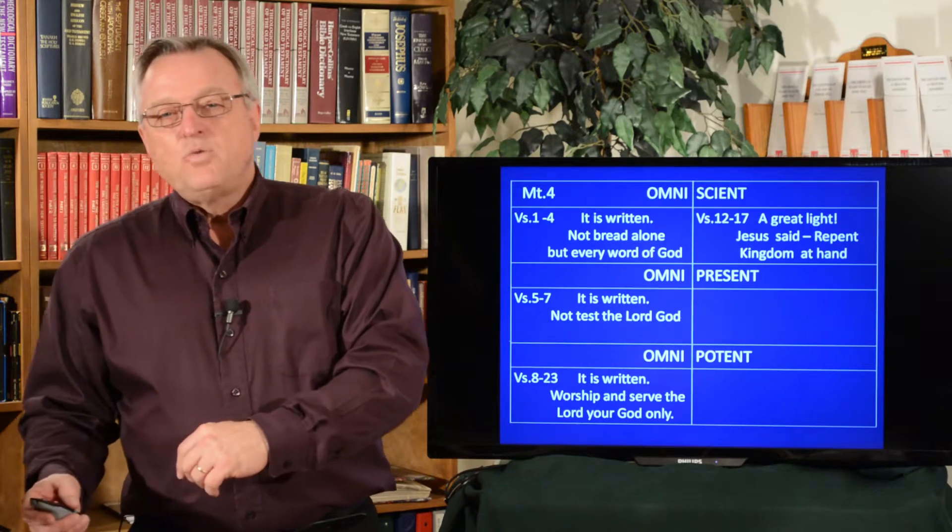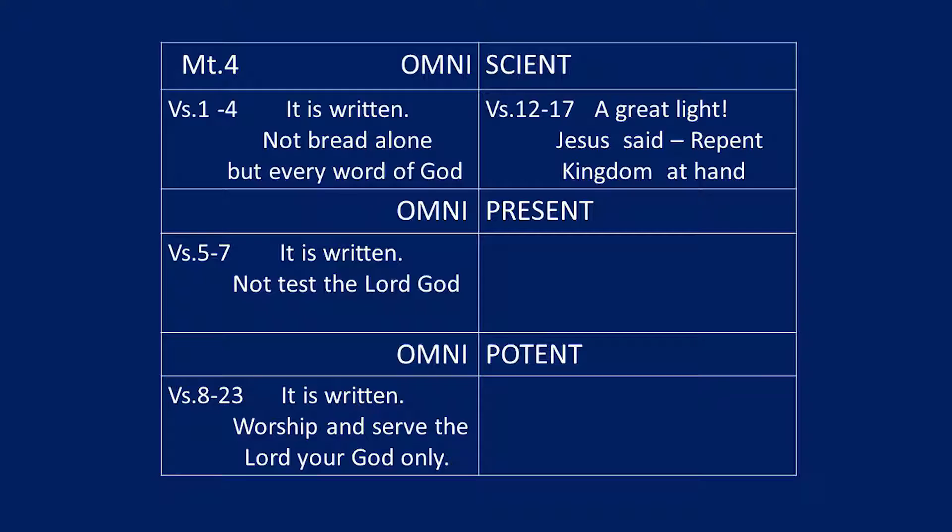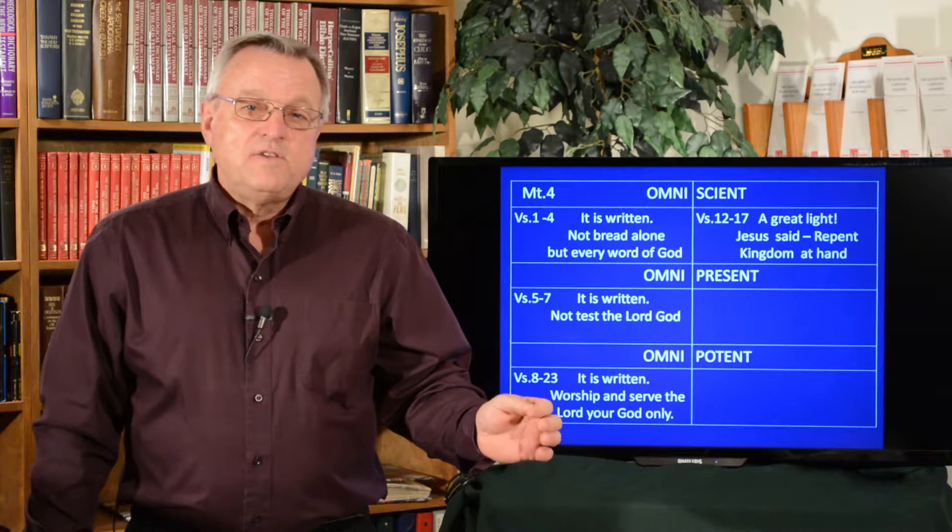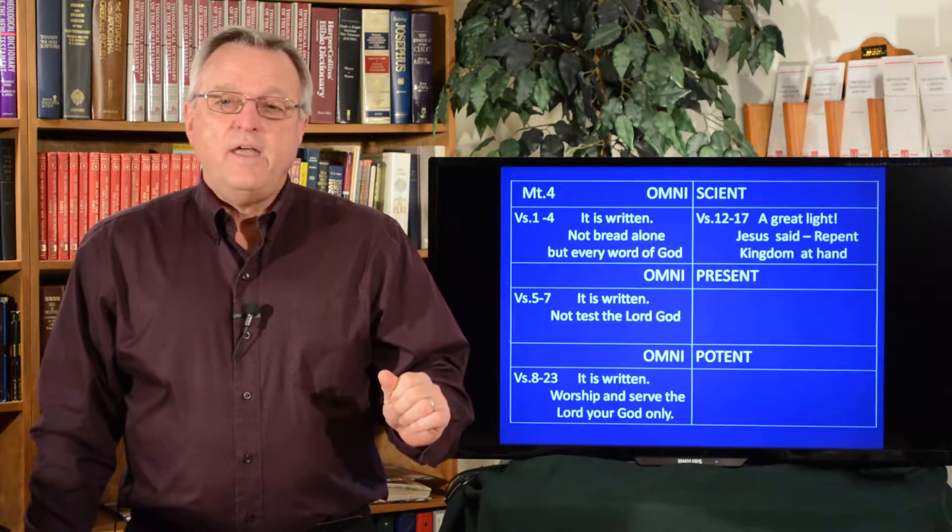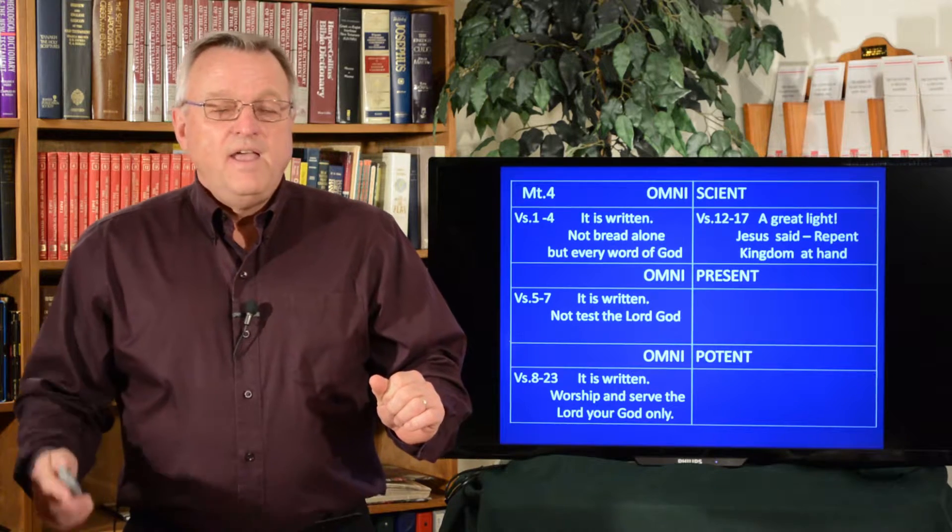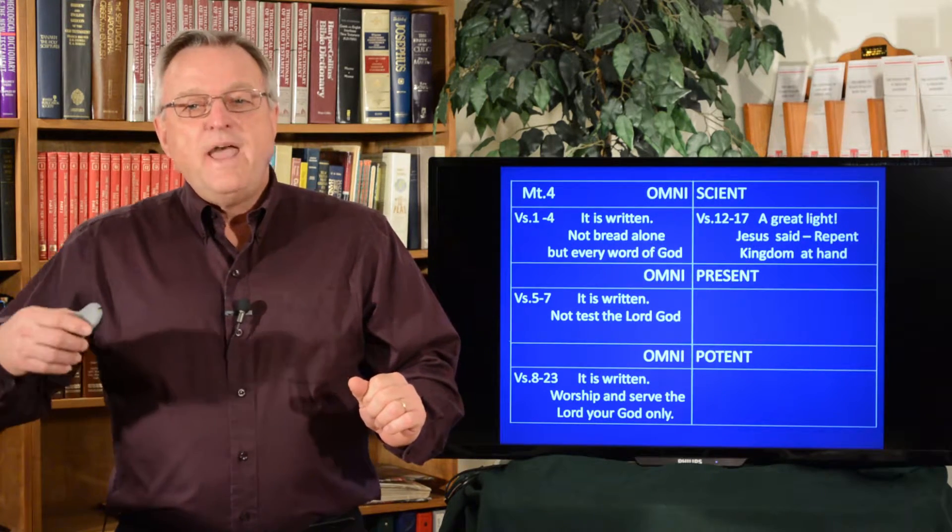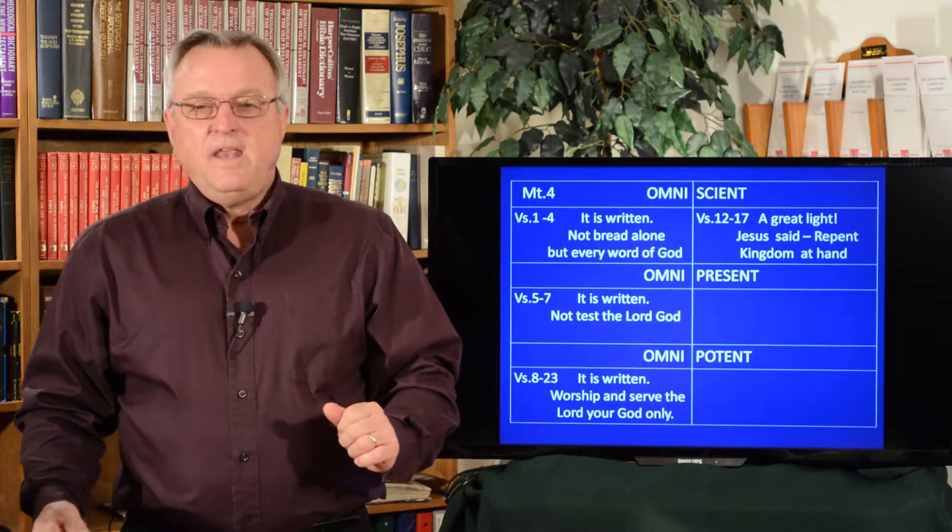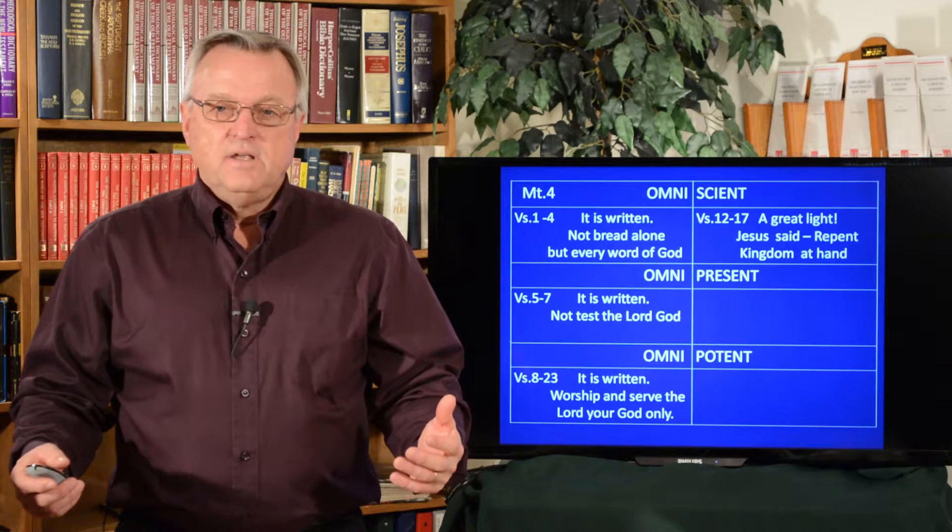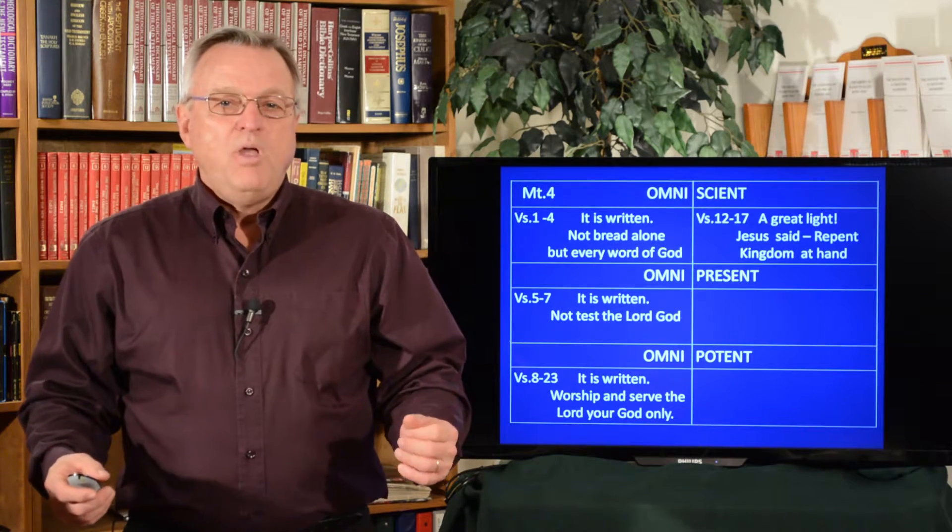And then we go into verse 12 to 17. Jesus is kicking off his ministry. And what does he quote from Isaiah where it's saying a great light is now starting to shine because Jesus is saying, repent for the kingdom of God is at hand. Now go back to the other side. Every word that comes from the mouth of God, that's what you need to feed on. And what do we see? Jesus, who is God, now proclaiming that the kingdom of God is at hand. And it's a great light that's shining for the people. Omniscient.